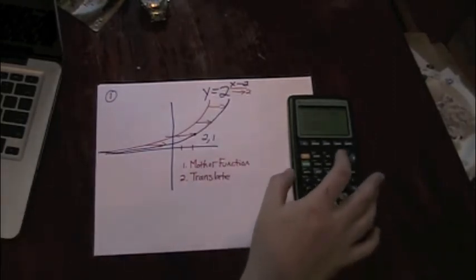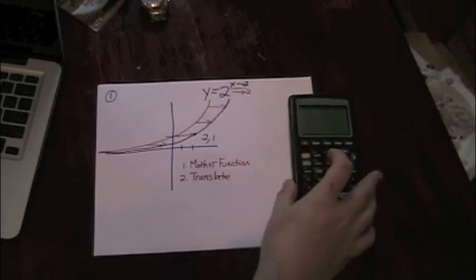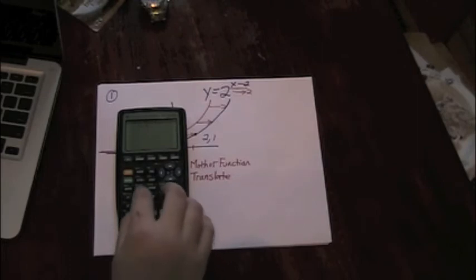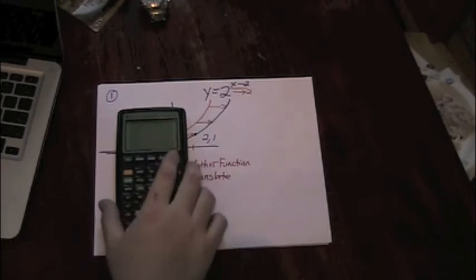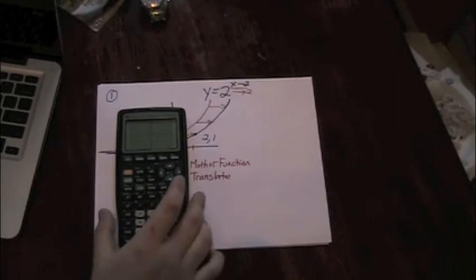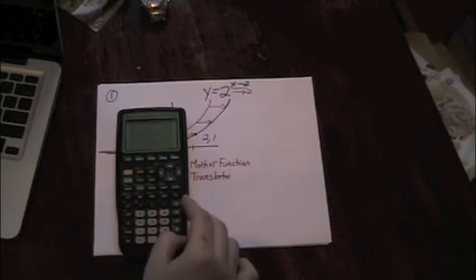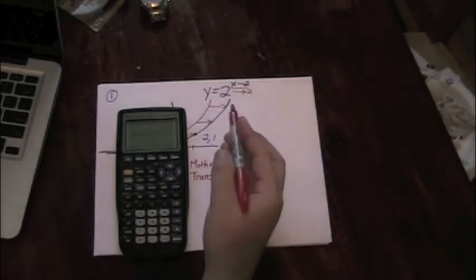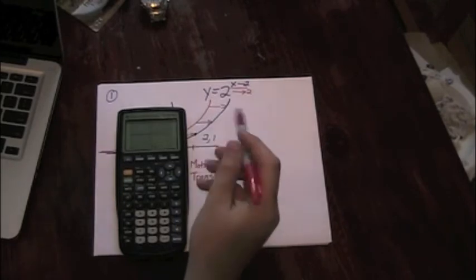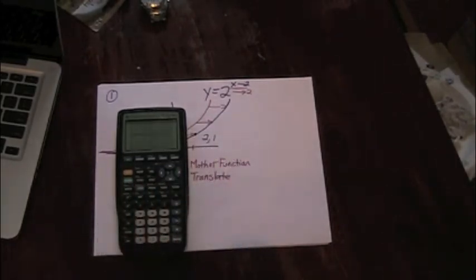If I'd like to confirm this, on my calculator I can type in 2 to the x minus 2. And I can go to graph. If I zoom in a little bit, I'm going to see the graph in a little bit more detail. And if you look carefully there, you can see that 2 over, I'm 1 up. So the graph on the calculator supports our conclusion.